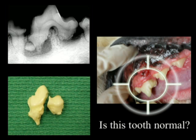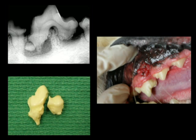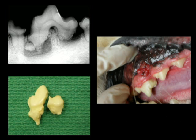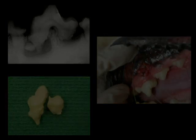Does this tooth look normal? On gross examination, it does. But on the left-hand side, we can see there's something very wrong with that tooth. And on the bottom left-hand corner, we can actually see the tooth after it's been removed.